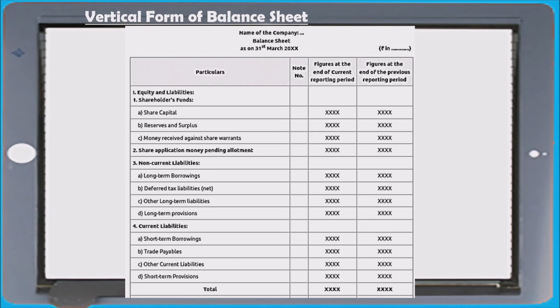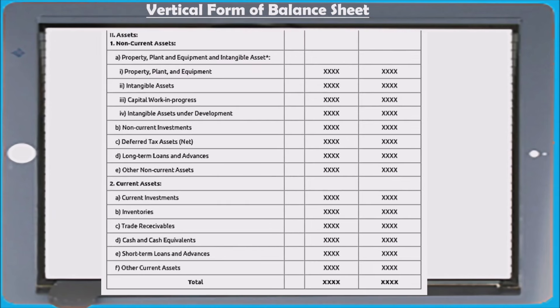Remember all items coming under all sub-headings. For the asset area, two headings: non-current assets and current assets. Non-current assets include sub-headings like property, plant and equipment, intangible assets, non-current investments, deferred tax assets, long-term loans and advances, other non-current assets. Property, plant and equipment includes subdivisions like capital work in progress, intangible assets under development. Current assets include current investments, inventories, trade receivables, cash and cash equivalents, short-term loans and advances, other current assets.